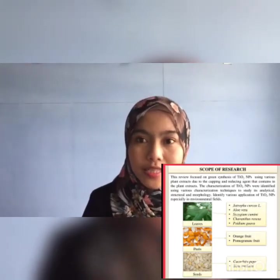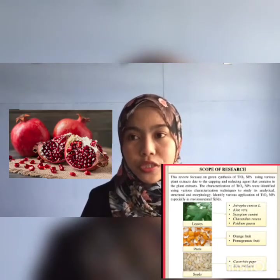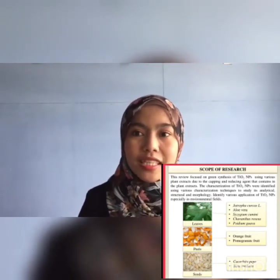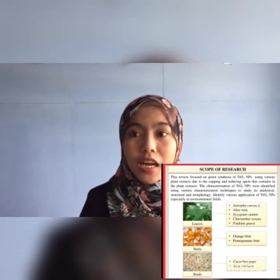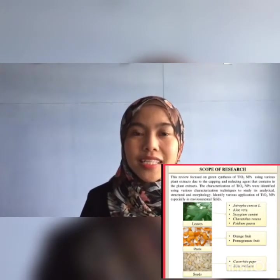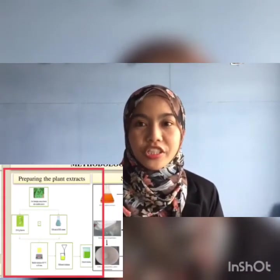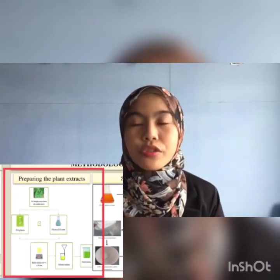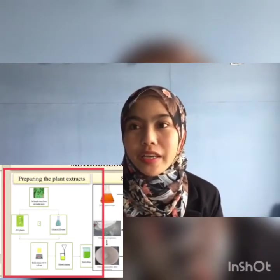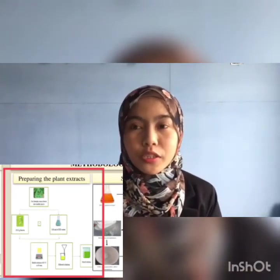For fruit peels, we can use orange fruits and pomegranate fruit. Furthermore, plant seeds that can be used to synthesize TiO2 nanoparticles are black pepper seed and Bixa orellana seeds. For methodology, there will be two protocols: the first one is to prepare the plant extract and the second one is the synthesis part to obtain the TiO2 nanoparticles.